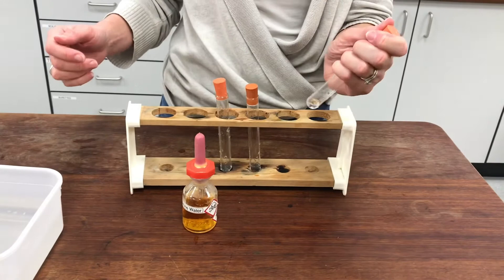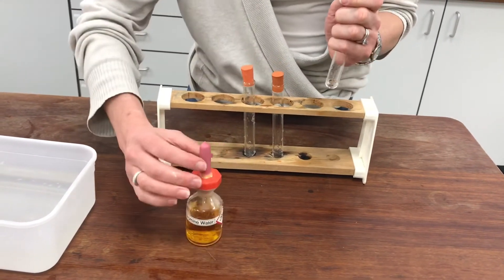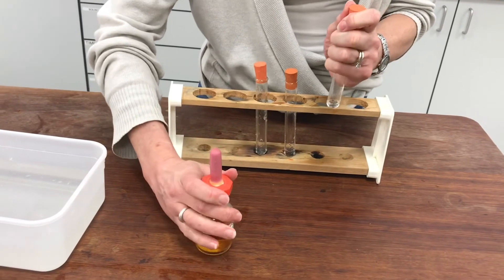So I would expect if this were an alkane that my bromine is just going to sit there and not be decolourised. So let's test it and see what happens.